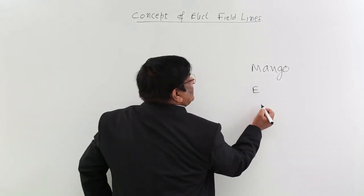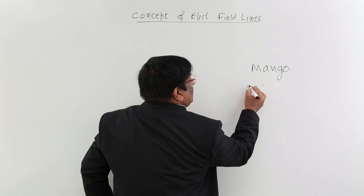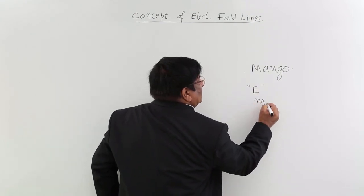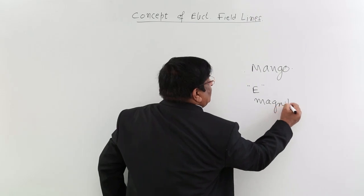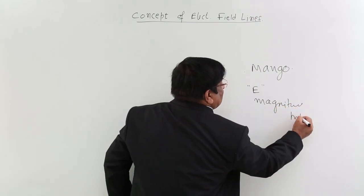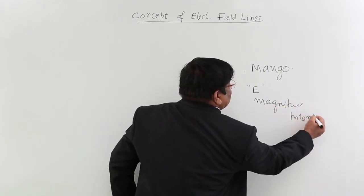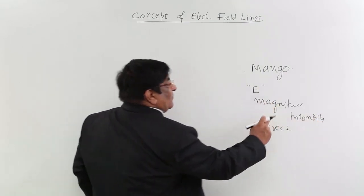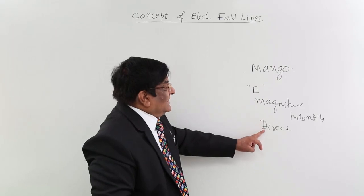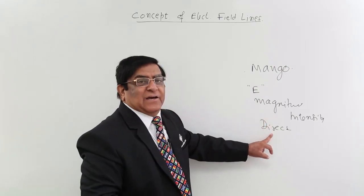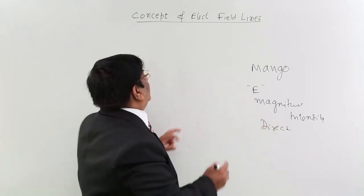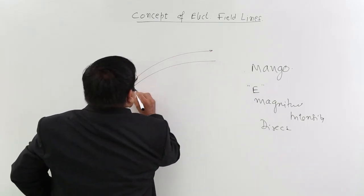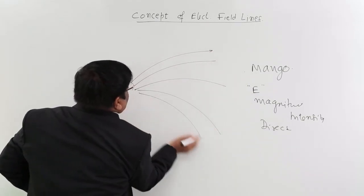Electric field is a vector quantity. If it is a vector quantity, it has got two characteristics. One is its magnitude and that magnitude we say intensity and other thing it has is direction. So I want to represent both the things, how much is intensity, how much is direction, by making graphical lines.